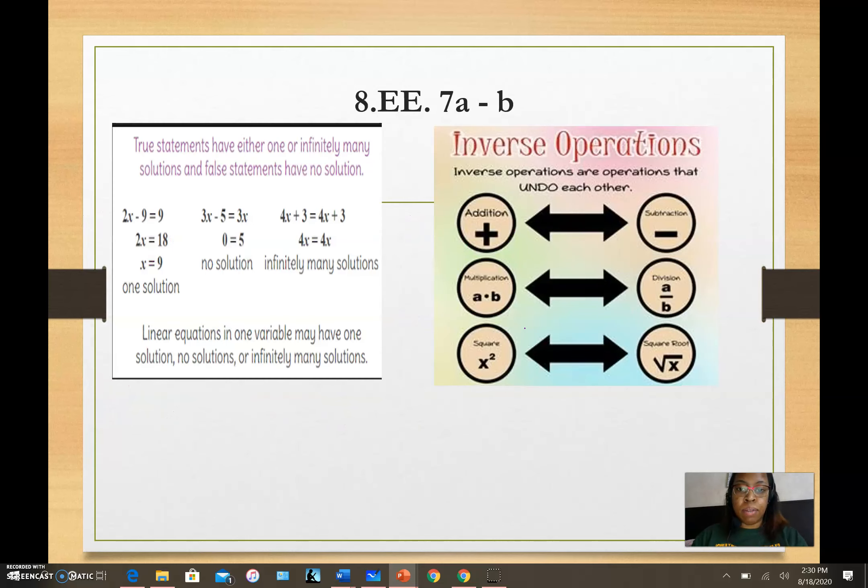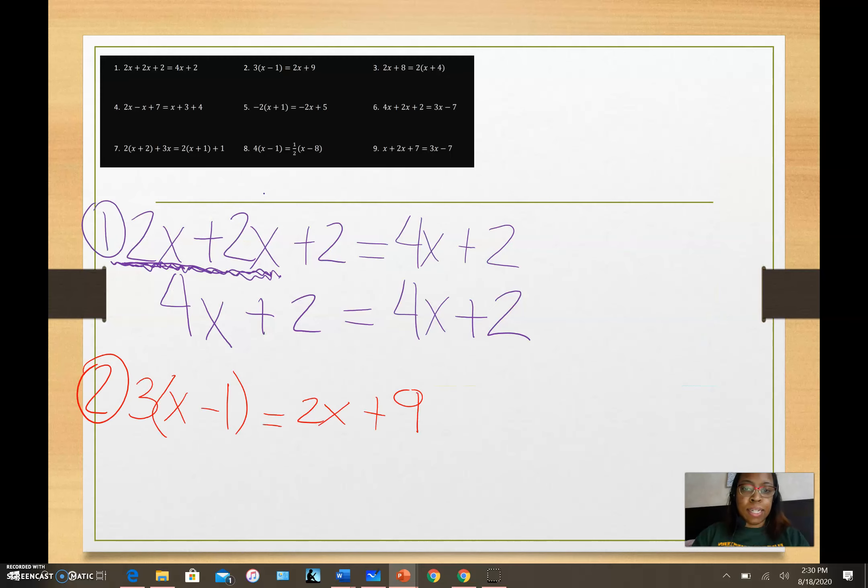I have 4x plus 2. I can stop right here because I already know something special about this. I have a setup very similar to this one where it is the same on both sides. When it is the same on both sides, we call it infinitely many solutions, meaning I can put whatever number in for x and it will always equal the same thing on both sides of that equation.